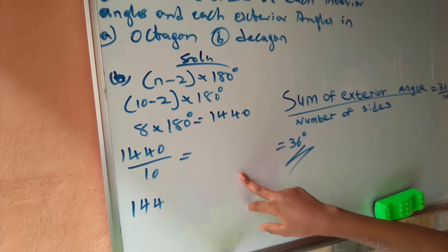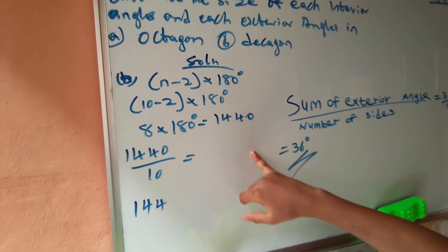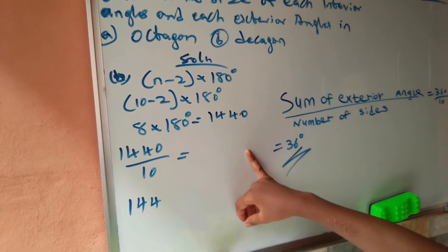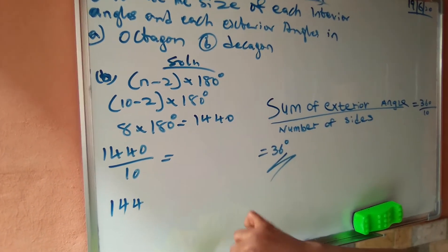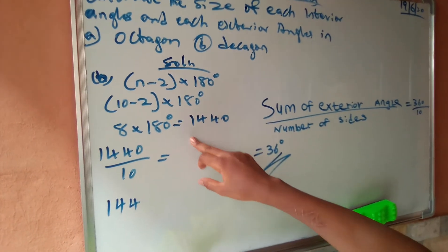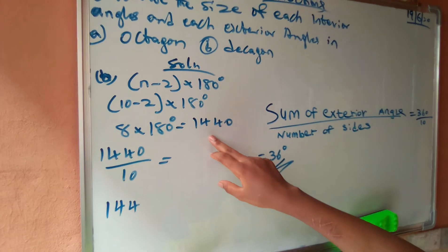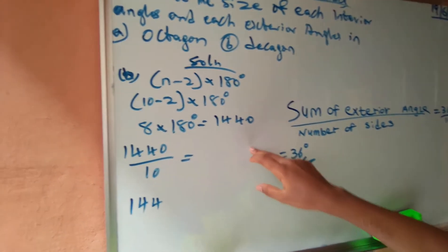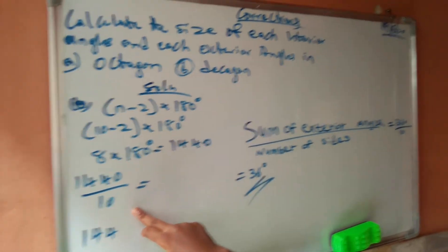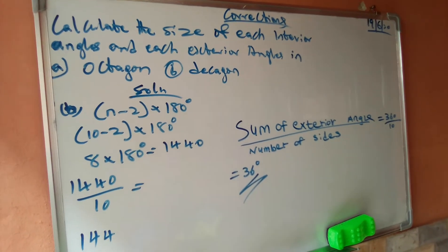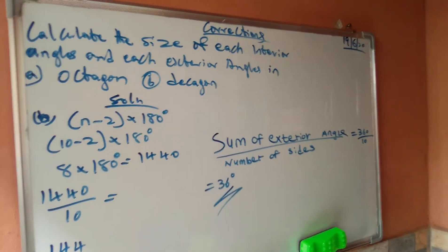So, bracket 10 minus 2. The decagon has 10 sides minus 2. 10 minus 2 equals 8 times 180. 8 times 180 degrees equals 1,440. 1,440 divided by 10 equals 144 degrees. Under which topic?